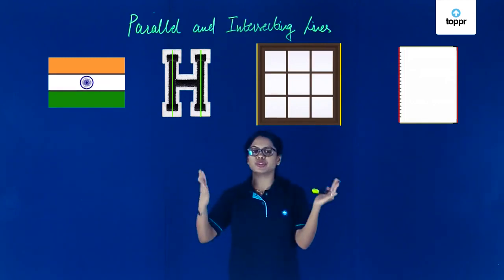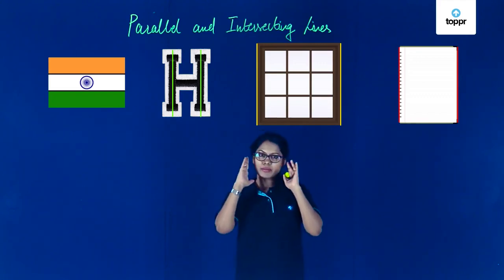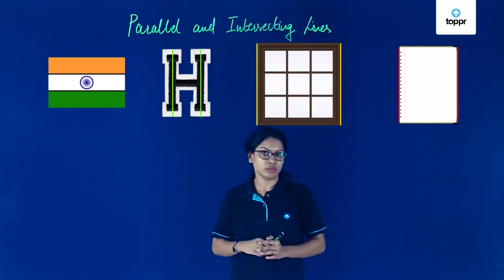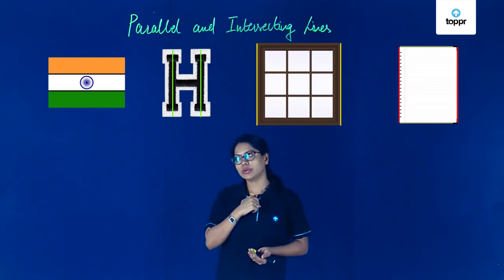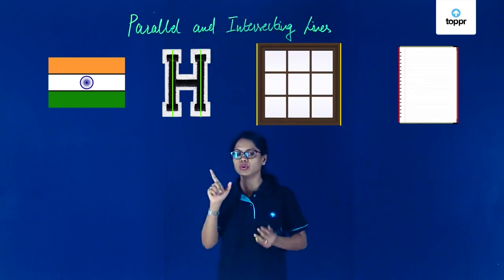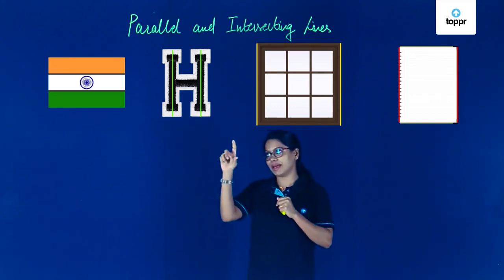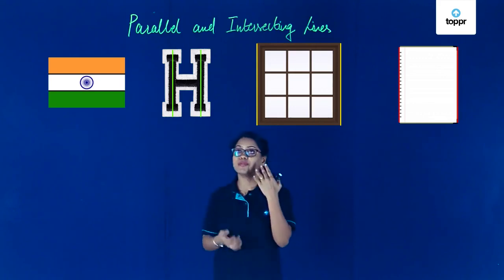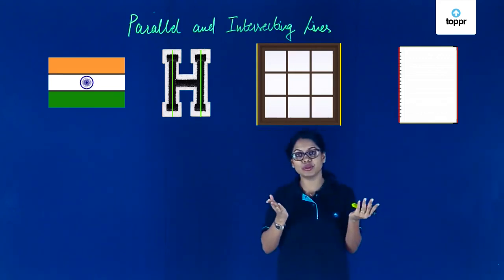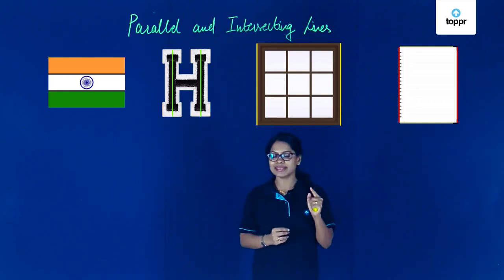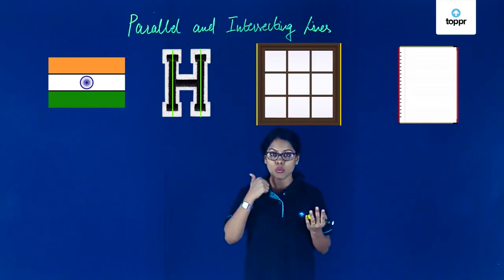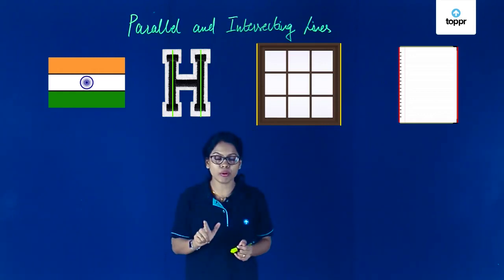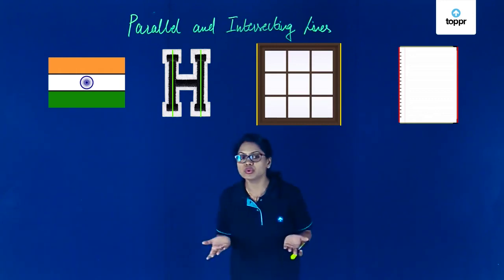Do you think they're going to meet? In this picture they're not meeting, but if I imagine extending them beyond the picture, do you think they'll ever meet? Of course not — they're never going to meet. Could the reason be that the distance between the two lines is the same throughout? In the Indian flag, the distance between the lines is the same, and the same is true for the alphabet H, a window, or a notebook. In all these cases, we have lines that are never going to meet and are at equal distance from each other throughout.